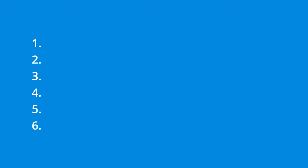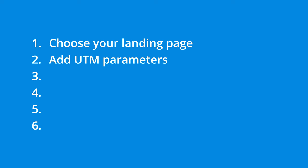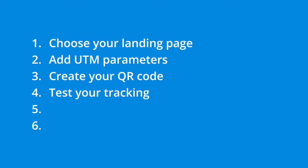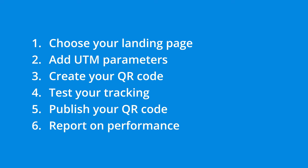Let's begin by summarizing the steps we need to take. There are six steps you'll need to follow to track QR codes in Google Analytics. First, you'll need to choose your landing page. Then you'll need to add UTM parameters, which are also called campaign tags for Google Analytics. You'll need to create your QR code, test that your QR code is tracked correctly, publish your QR code, and finally report on their performance.